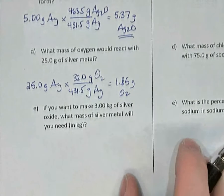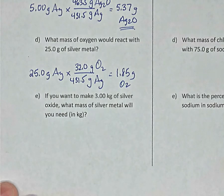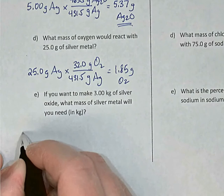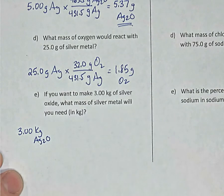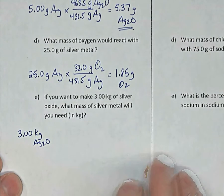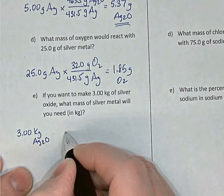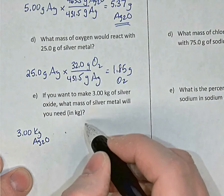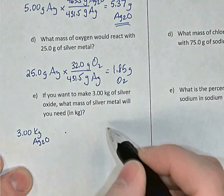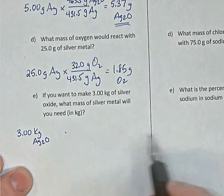Finally, if you want to make 3 kilograms of silver oxide, what mass of silver would you need? The slightly longer way is to convert 3.00 kilograms to grams of silver oxide, then convert grams of silver oxide to grams of silver, then convert back to kilograms — three unit multipliers.